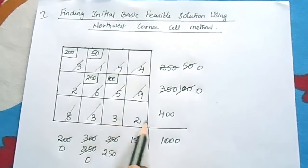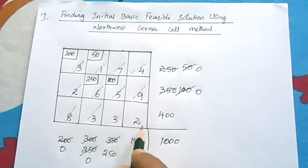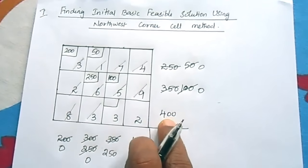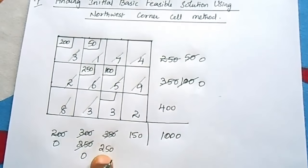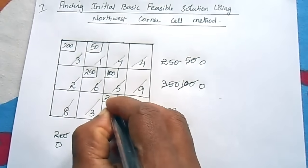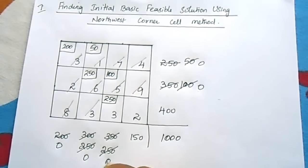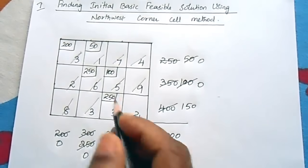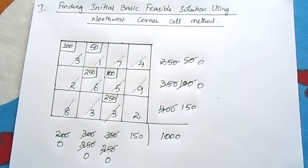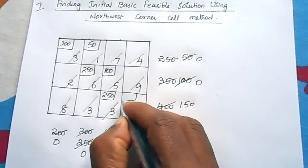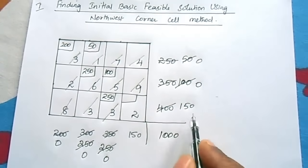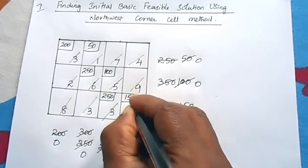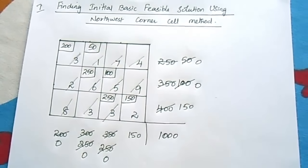Now we have 2 cells remaining. The Northwest corner has values 250 and 400. The least is 250, so allocate 250. The remaining balance is 150. Finally, the last cell has row and column value both equal to 150, so allocate 150. The entire demand and supply is met.